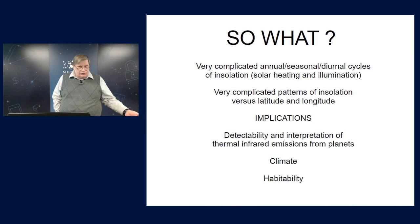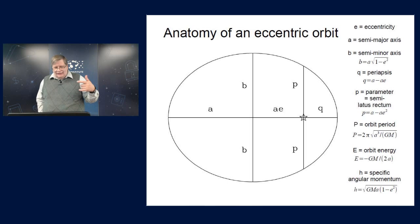So, as we know from Kepler's first law, planets go around their stars in ellipses with the sun or a star at one focus, as depicted here. And the eccentricity is a measure of how far the focus is from the center of the orbit. And it's measured in units of the semimajor axis, which is just half the longest diameter of the orbit.